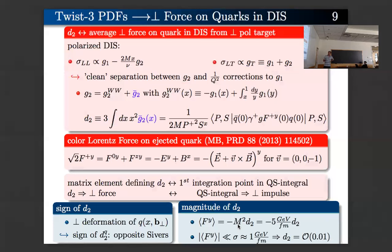Another indicator comes from the Qiu-Sterman integral, which tells you something about the transverse impulse a quark acquires from final state interactions before it fragments. The Qiu-Sterman integral involves the same operators except the gluon field strength tensor is integrated along the light cone from zero — the position of the quark — to light-front infinity. The Qiu-Sterman integral has a clear interpretation as the transverse impulse the active quark gets from the final state interaction. This matrix element is the first integration point of the Qiu-Sterman integral, which is another indicator that its physical interpretation is that of a transverse force.